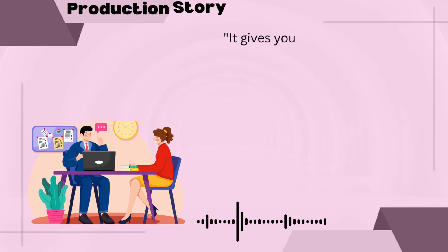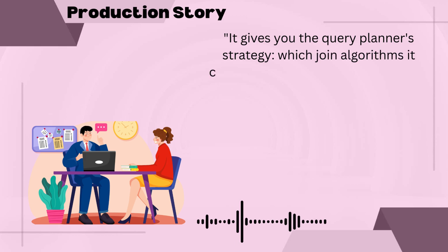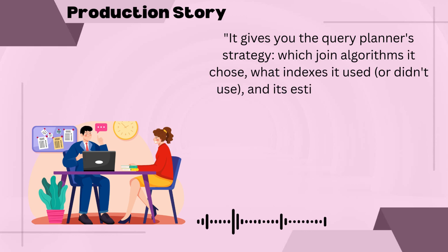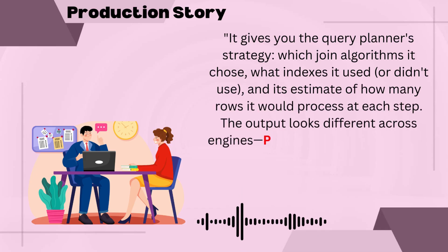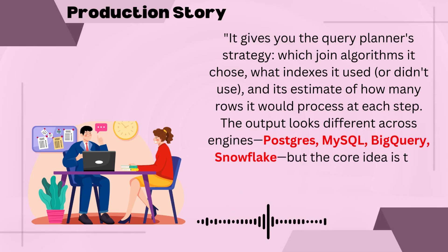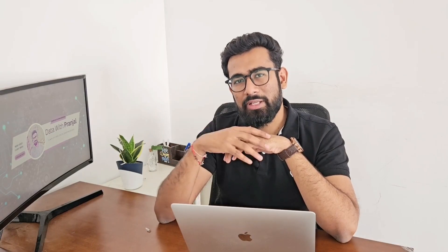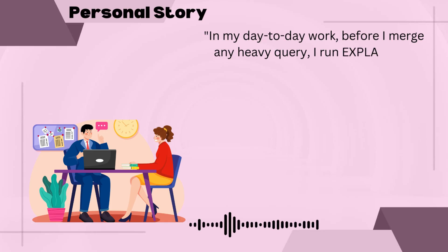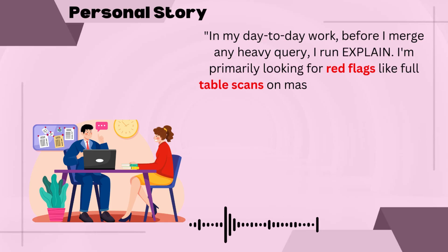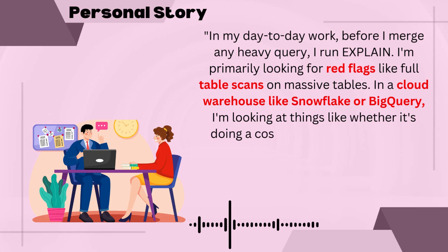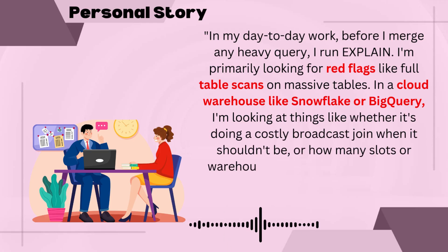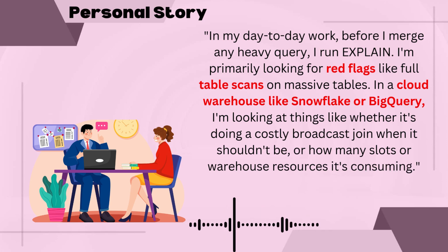Now give the definition. EXPLAIN gives you the query planner's strategy: which join algorithm was chosen, what index is used, and how many rows it estimates to process at each step. The output looks different across database engines, but the core idea remains the same. In my day-to-day work, before I merge any heavy query, I run EXPLAIN. I am primarily looking for red flags like full table scans on massive tables. In cloud warehouses like Snowflake or BigQuery, I look at whether it is doing a costly broadcast join where it shouldn't, or how many warehouse slots it is consuming.